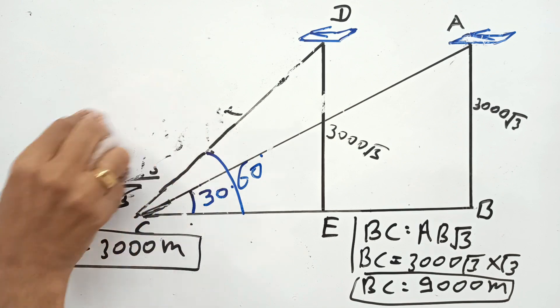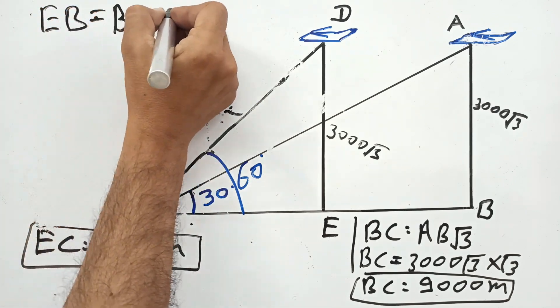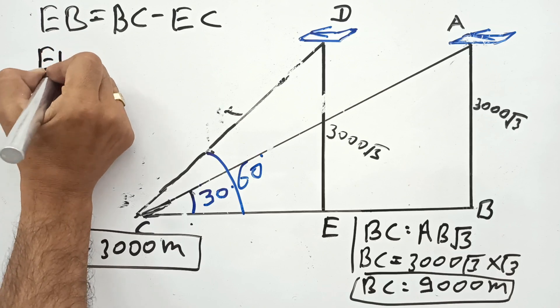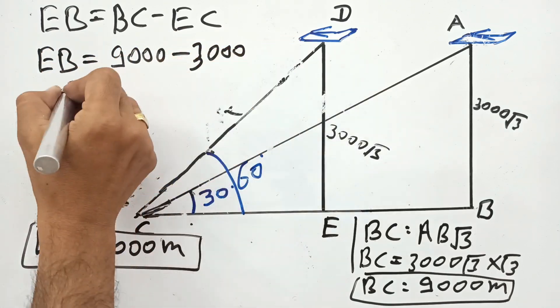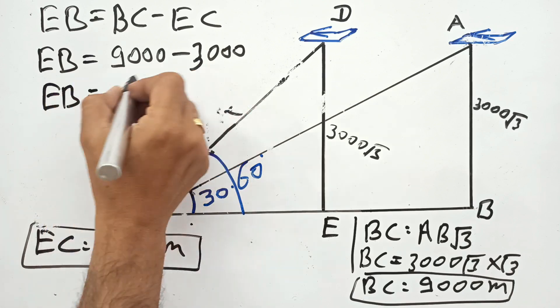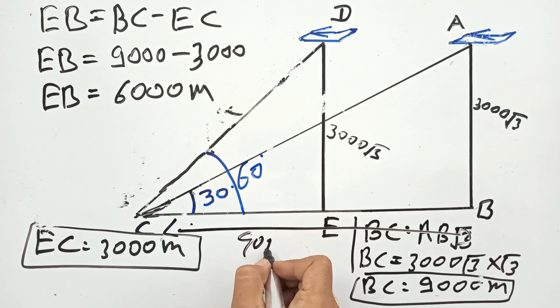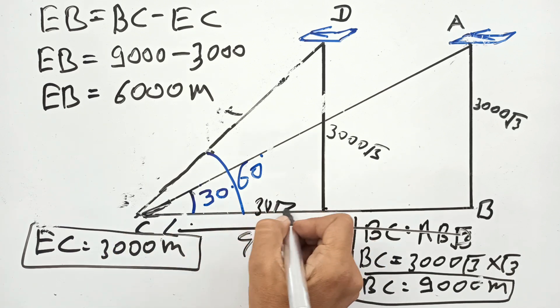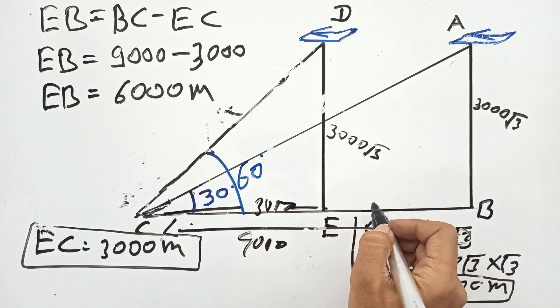To get BE we will subtract EC from BC. This total BC is 9000 and EC is 3000, so you will subtract this 3000 from 9000, so you will get 6000.